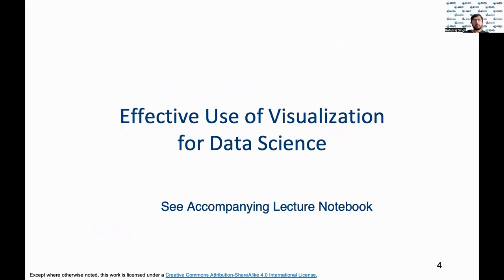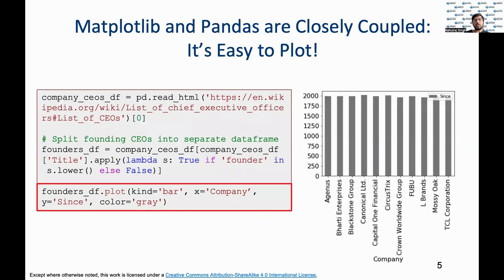Let us now dive deeper into visualization specific to data science. It is best to follow this video with the Python notebook available at IBM's OpenDS for all GitHub page under the exploratory data analysis section. Pandas is the most popular library for data analytics thanks to its wide range of custom functions that help with numerous analytical operations. For visualization though, matplotlib is another Python library that goes well together with pandas, and analysts or data scientists generally use these two libraries in conjunction with each other.